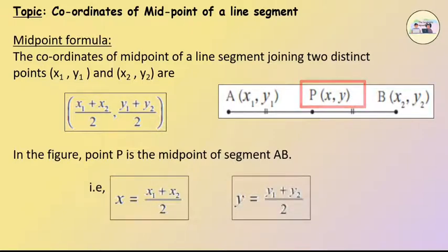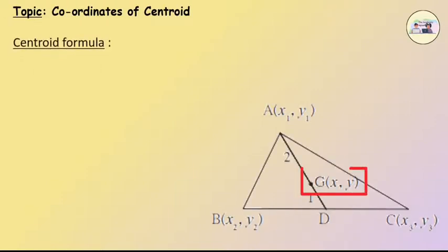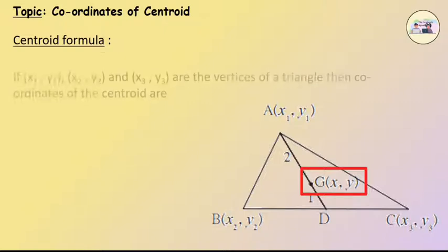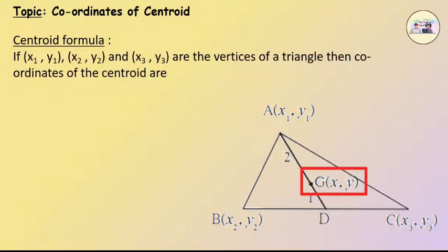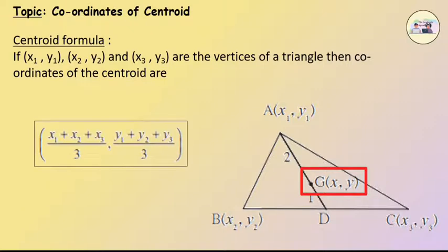Centroid is the concurrent point of medians of a triangle. To find the coordinates of the centroid, we can use the centroid formula. That is, if (x1, y1), (x2, y2) and (x3, y3) are the vertices of a triangle, then the coordinates of the centroid are (x1 + x2 + x3)/3 comma (y1 + y2 + y3)/3.